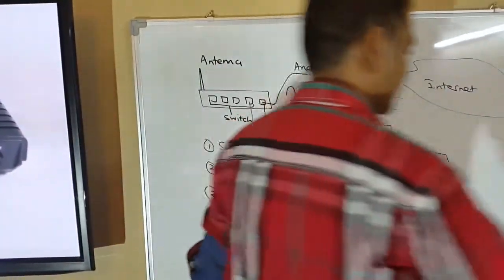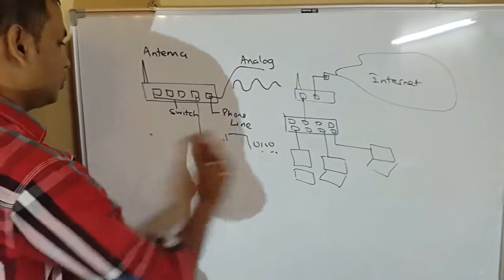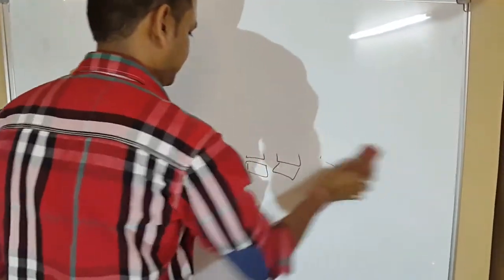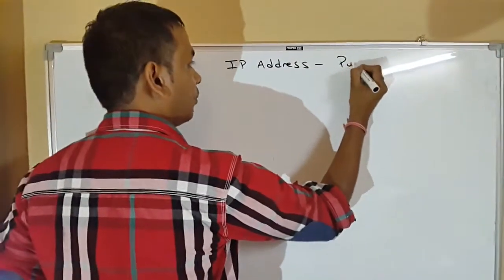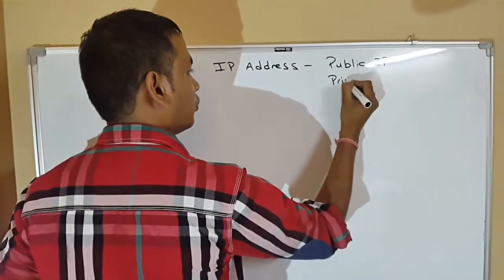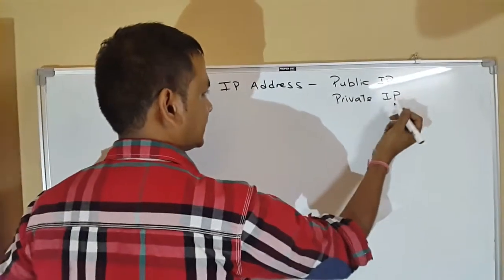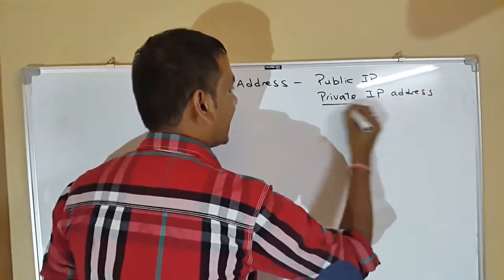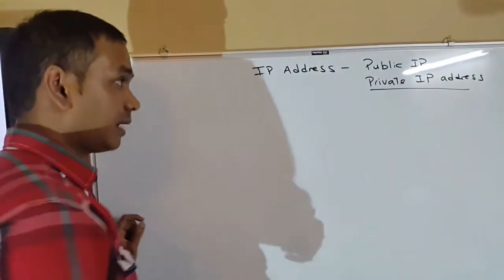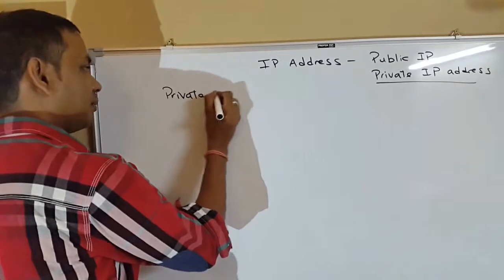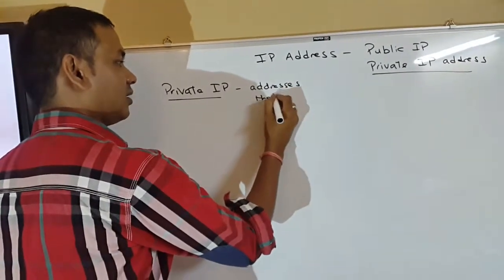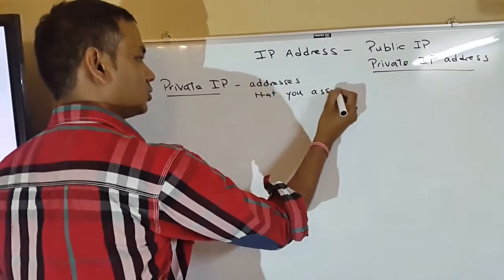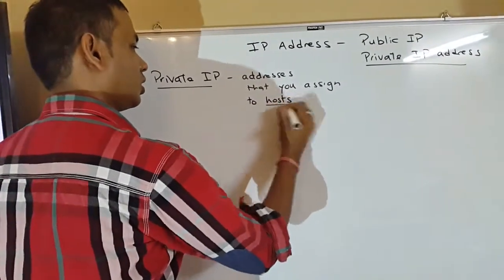So to continue now, let us continue on IP address. IP address - you have two types of IP address. You need to understand that you have two types of IP address. One is called the public IP address, and one is called the private IP address. The public IP address, I will come at a later point in time. What is the private IP address?